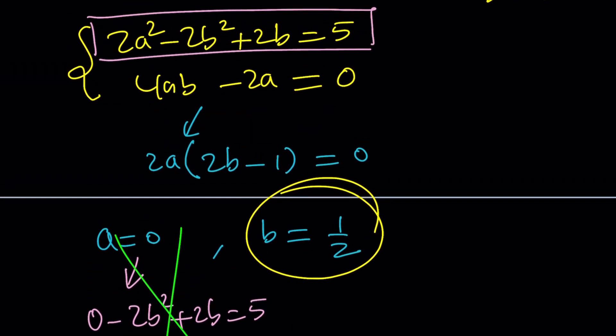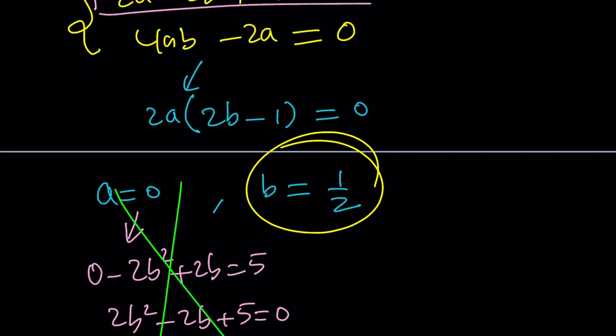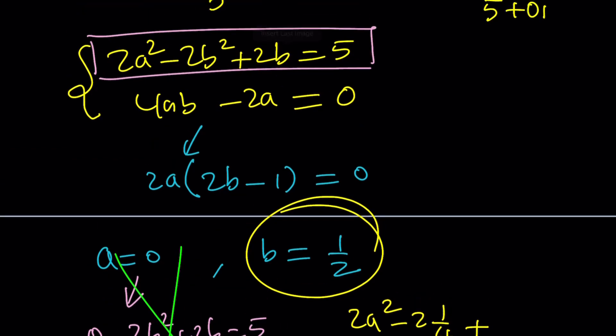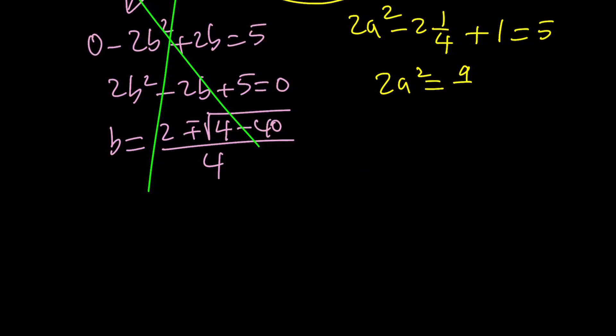Now what happens when b is equal to 1 half? We can go ahead and plug in 1 half and see what happens. That gives us 2a squared minus 2 times 1 fourth plus 2 times b, which is 1, equals 5. From here we get 1 half plus 1. So if you subtract, 2a squared equals 4 minus, actually that's going to be 4 plus 1 half. So we get 2a squared is equal to 9 halves.